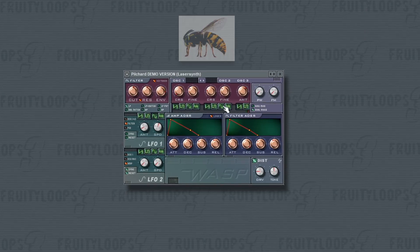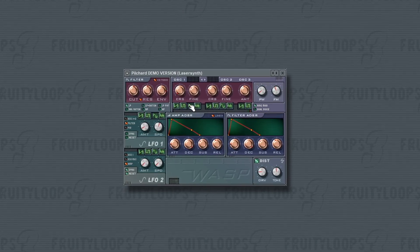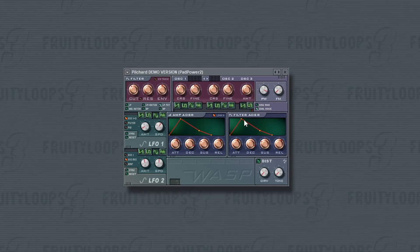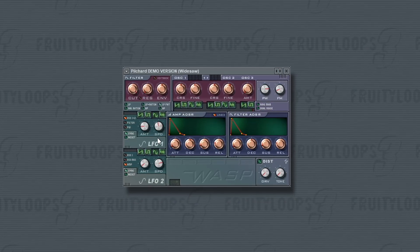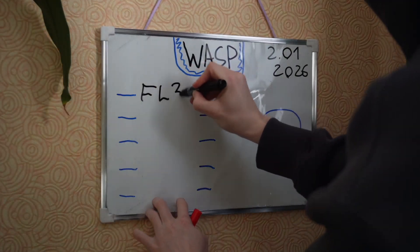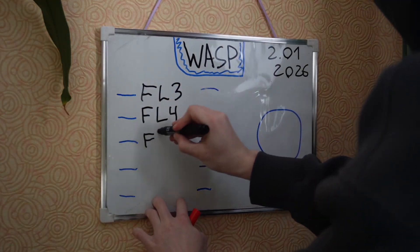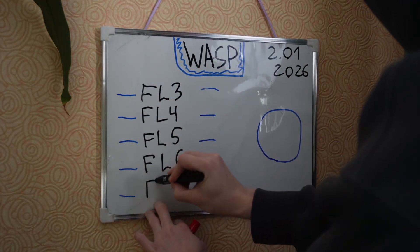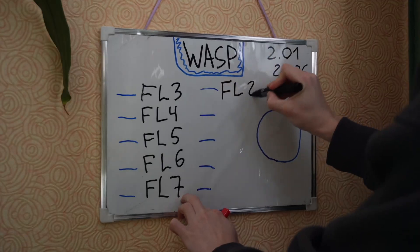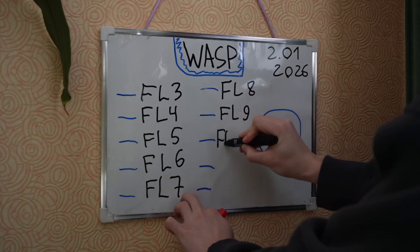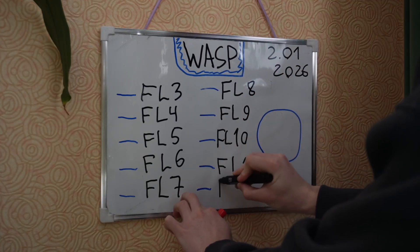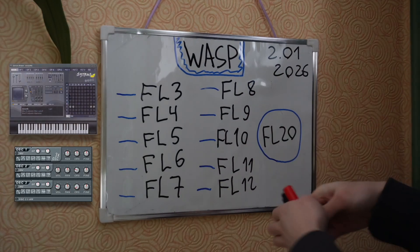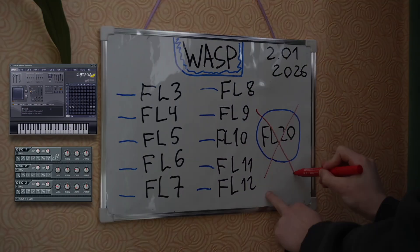Wasp is a basic 3-oscillator synth that uses subtractive synthesis. But Wasp didn't last long. Here are the versions where it was included. In FL Studio 20, ImageLine decided it was crap and offered 3X OSC or Citrus instead.